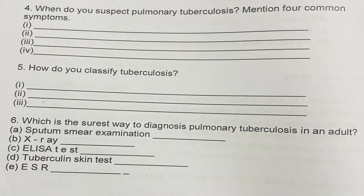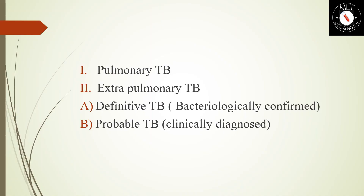Fifth question: How do you classify tuberculosis? Tuberculosis is classified into two: pulmonary tuberculosis and extra-pulmonary tuberculosis. It is also classified into definitive TB and probable TB. Definitive TB means bacteriologically confirmed; probable TB means clinically diagnosed.